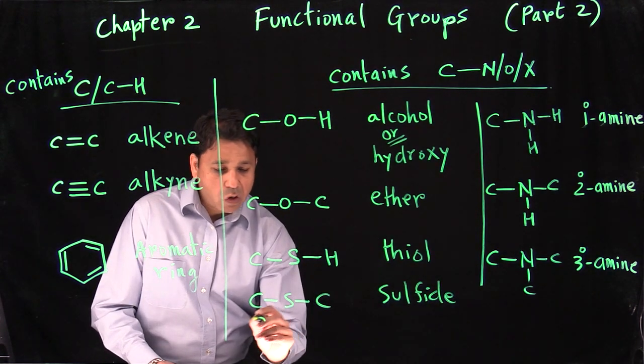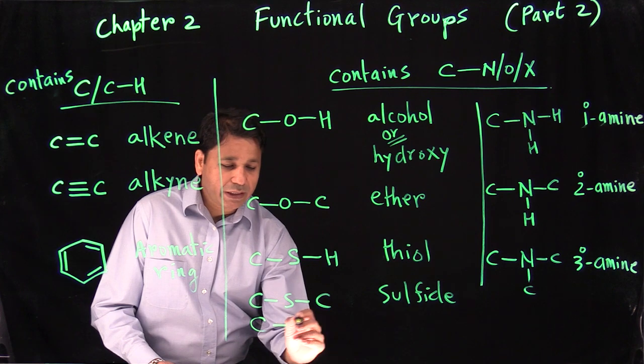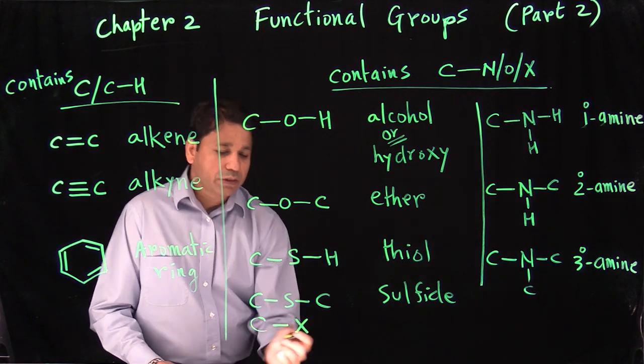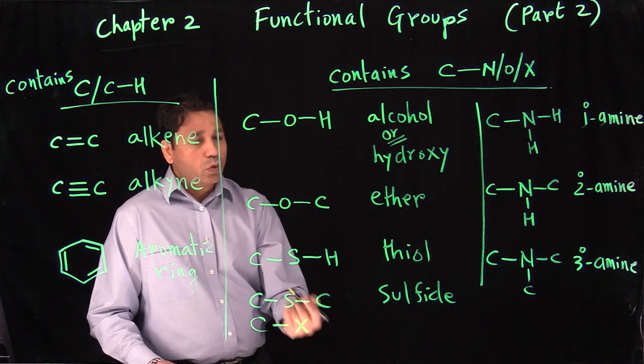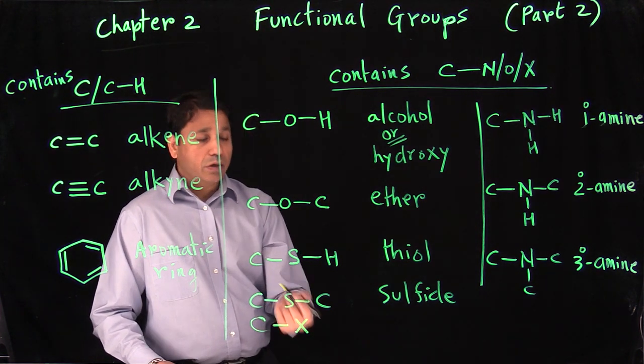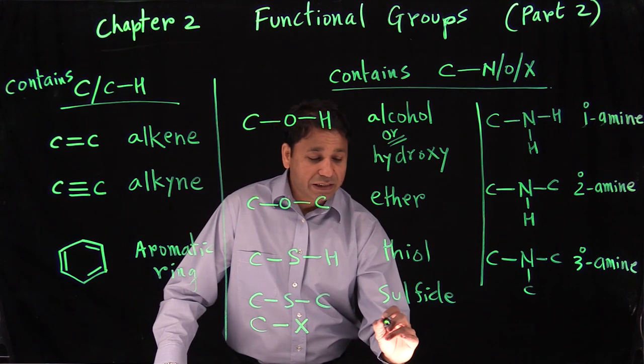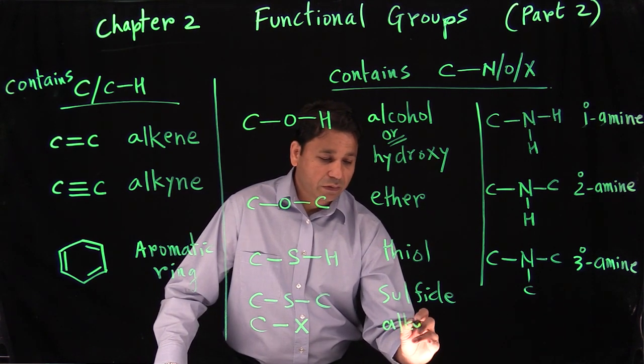The last one in this category: when you have a carbon with a halogen — X can be fluorine, chlorine, bromine, or iodine — this is called an alkyl halide.